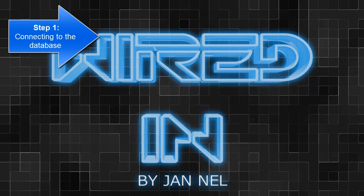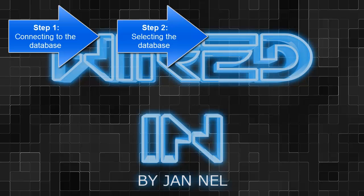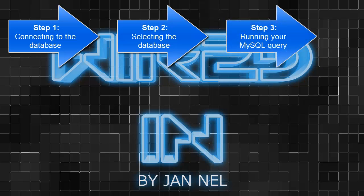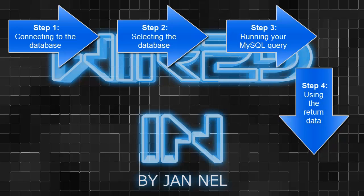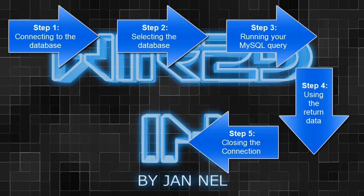The first step is where we are going to create a connection to the database. The second step, we have to select the database that we want to use. The third step is where we are going to perform our database queries or our MySQL statements. Fourth, we will use the returned data — for example, display a list of users' names and surnames in an ordered list. The fifth step will be where we close the connection that we created in the first step.